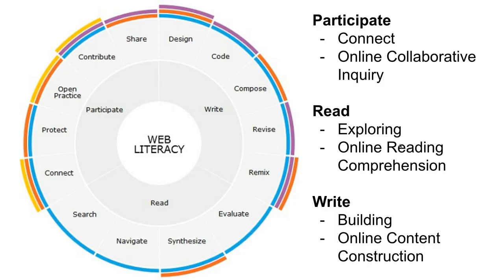As we move into the most recent version of the web literacy map, we can see that writing or online content construction is pulling in coding and programming, pulling in design elements and design aesthetics — creating content that looks good. We also think about composing or writing HTML or CSS, creating code, revising it, and remixing content that others share online or remixing our own content.